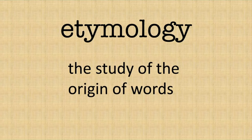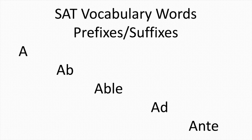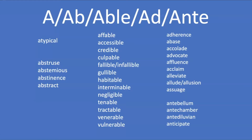Please hit that like button and subscribe and let's get started. In this episode we are going to get started with the prefixes A and AB, the suffix -able, and the prefixes AD and ANTE. These are the words covered in this video. If you'd like to pause here and take note of anything, please do so. And now let's get started with the prefix A.